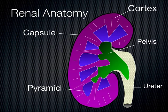This is the renal cortex. These are the renal pyramids, which all coalesce together to drain urine into the renal pelvis — sometimes called the renal sinus — which then drains out the ureter.